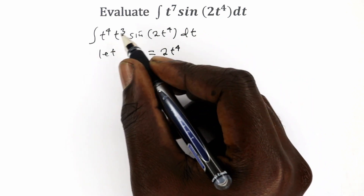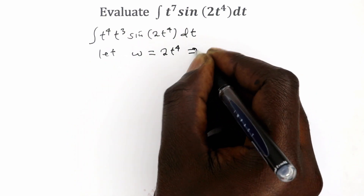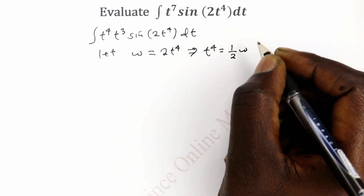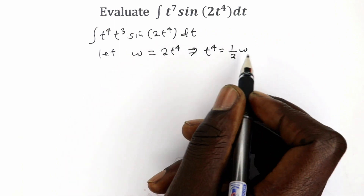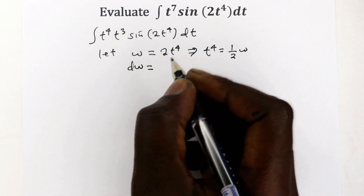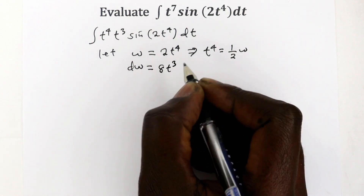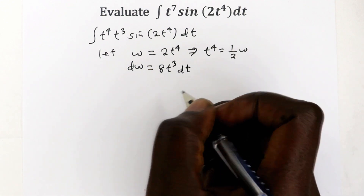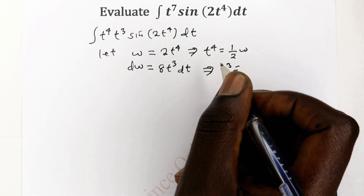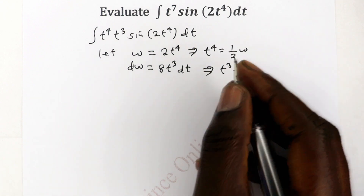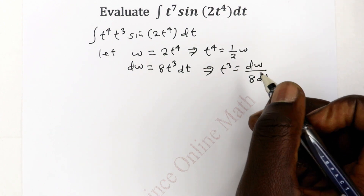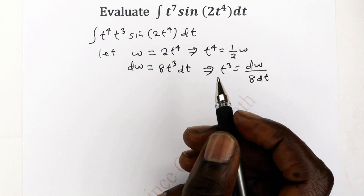We can express t^4 and t^3 in terms of w. Dividing both sides by 2 gives t^4 = w/2. Then if we differentiate, we get dw = 8t^3 dt with respect to t. Making t^3 the subject by dividing both sides by 8 dt gives t^3 dt = dw/8. So now we have expressed both t^3 and t^4 in terms of w.